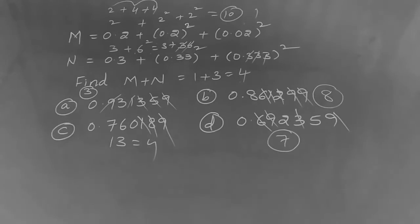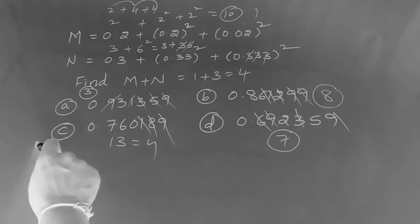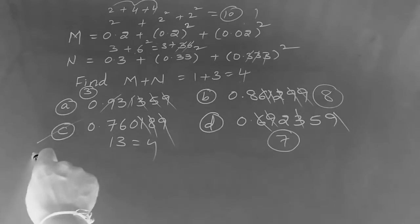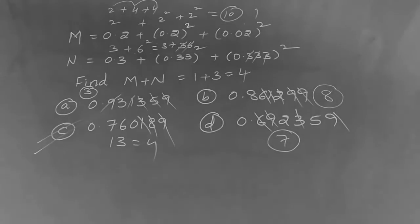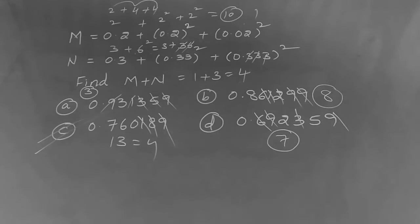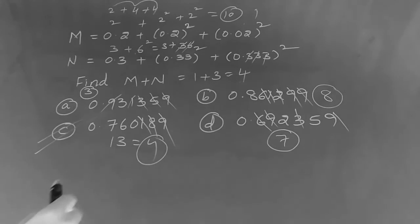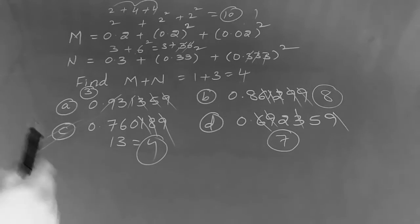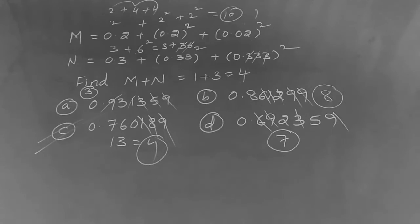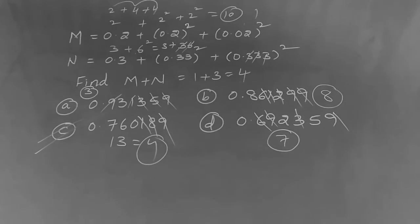Digital sum is 7. I want to show you the answer option. Option C is the answer. Digital sum 4. Our answer is Option C. Thanks for watching. Please subscribe to our channel. Share this information with your friends.